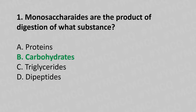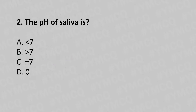Now let's move to question number 2. The pH of saliva is: Option A: less than 7. Option B: greater than 7. Option C: equal to 7. Option D: 0. And the answer is Option A: less than 7.